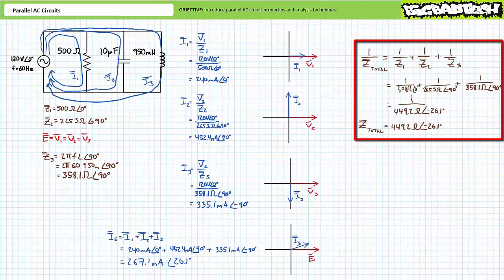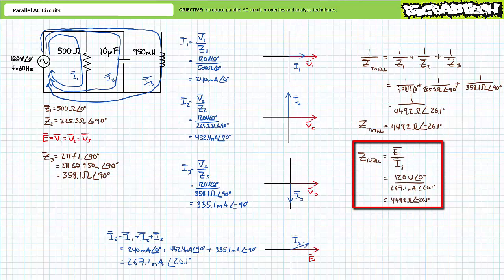As a means of checking our work for this new three-path parallel circuit, we can use total impedance and Ohm's law. The parallel combination of these three elements presents a total impedance of approximately 449.2 ohms at an angle of negative 26.1 degrees. Ohm's law solving for total impedance — supply voltage over source current — also yields 449.2 ohms at an angle of negative 26.1 degrees. I have a reasonable degree of confidence our earlier answers are correct.